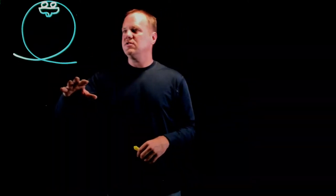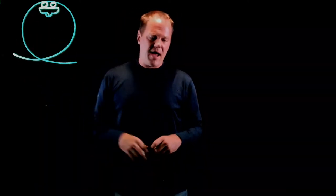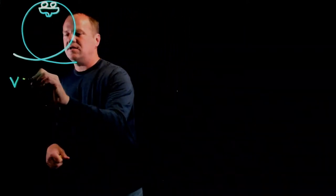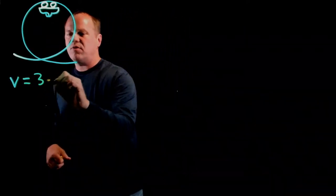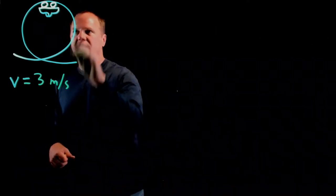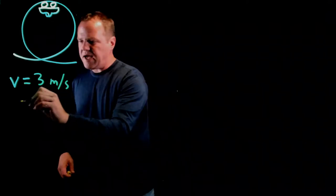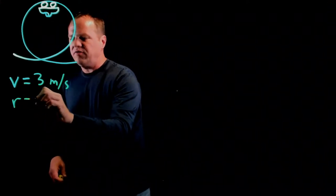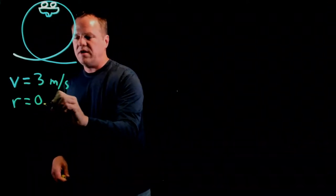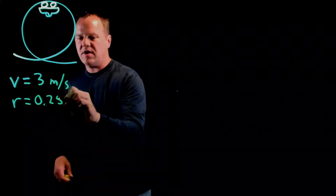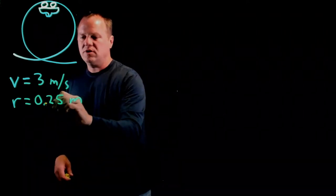So you have this toy car that's going around a loop-de-loop, and we know that the car has a speed of 3 meters per second. It's at the top of this loop-de-loop, and the loop itself has a radius of 25 centimeters, or converting that to SI units, 0.25 meters.